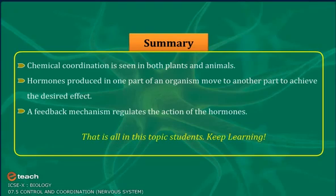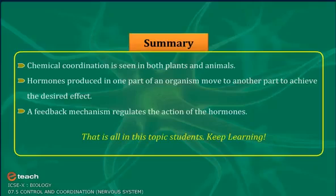Chemical coordination is seen in both plants and animals. Hormones produced in one part of an organism move to another part to achieve the desired effect. A feedback mechanism regulates the action of the hormones.